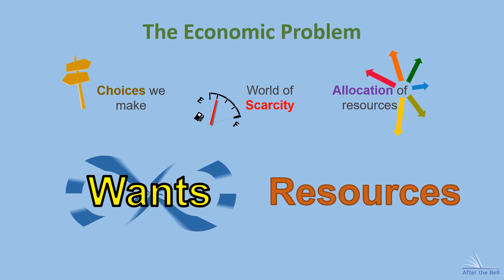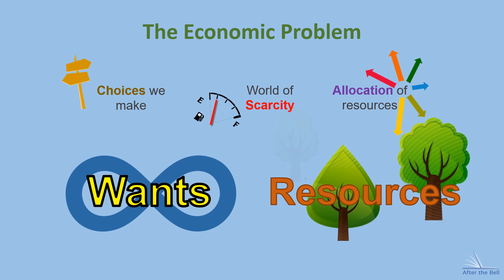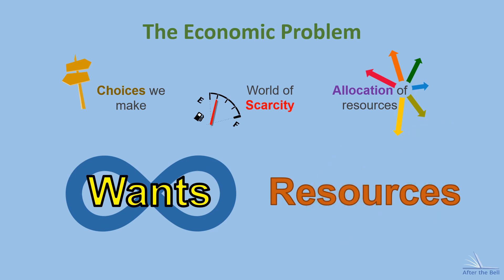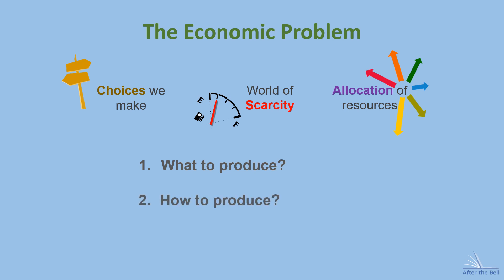Wants are infinite but the resources available to us are finite. In addressing this core problem, three key questions need to be asked: what to produce, in order to satisfy all the wants; how to produce — what's the most effective way to maximise production to meet as many of the wants as we can; and for whom to produce — whose wants are most deserving for us to allocate resources towards.